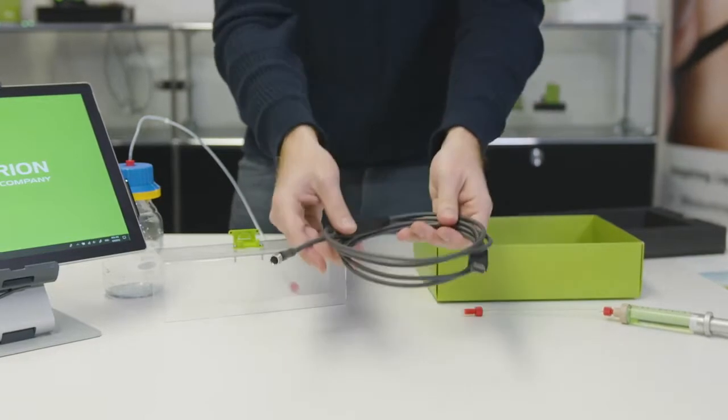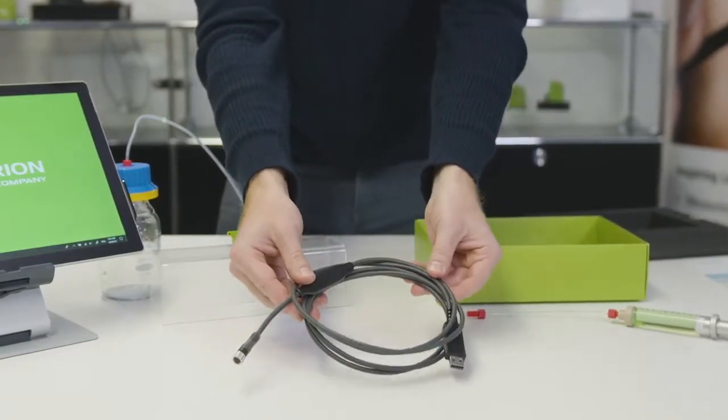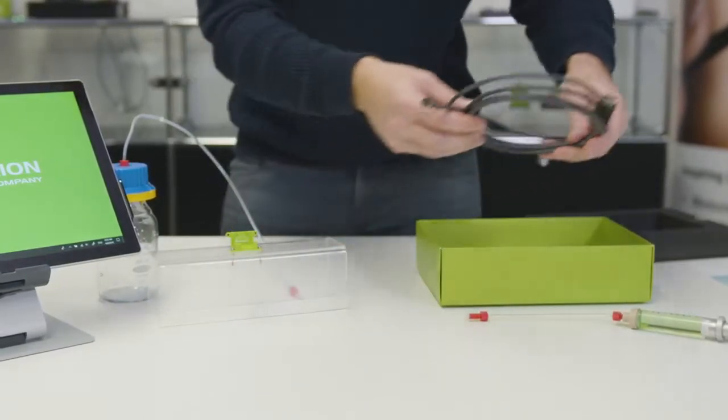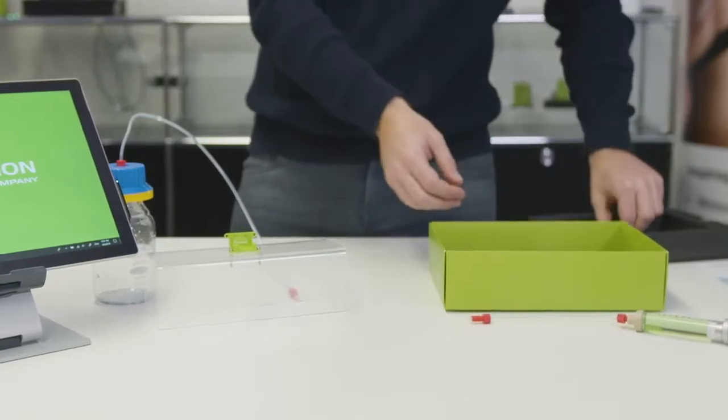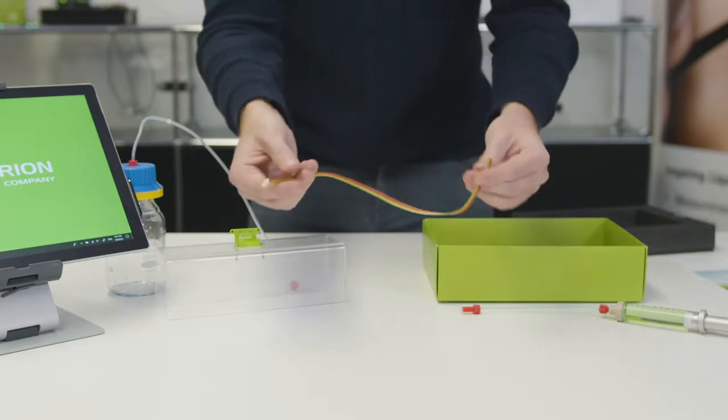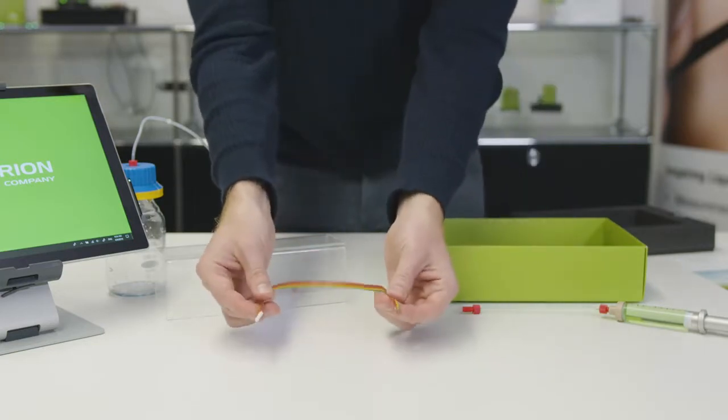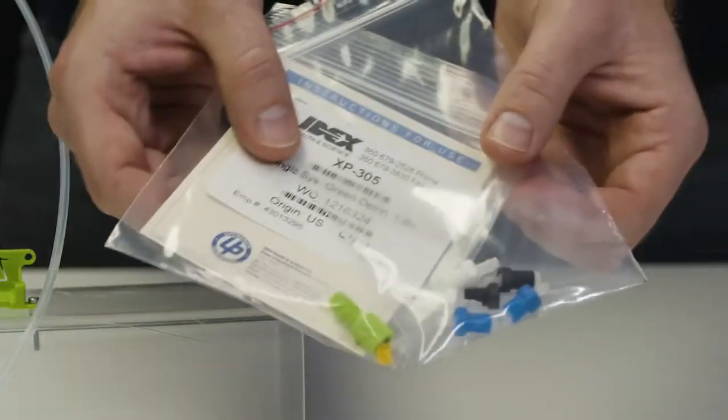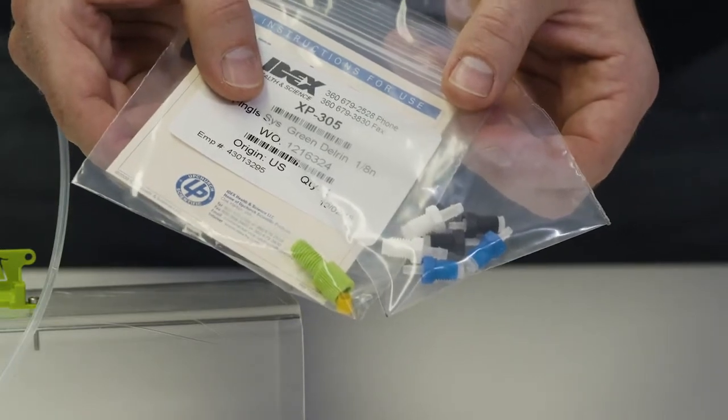It also includes one SCC1 USB sensor cable to connect the sensor to a PC, one adapter cable to connect the sensor to the USB cable, one ribbon cable to connect the sensor to a microcontroller, and a set of fluidic fittings for different types of tubes.